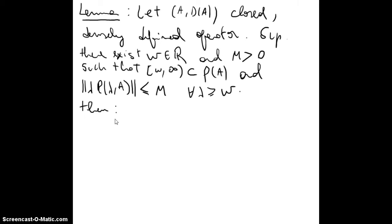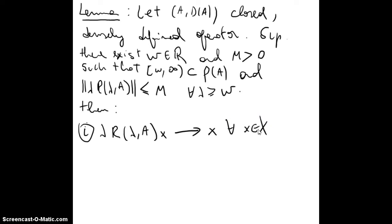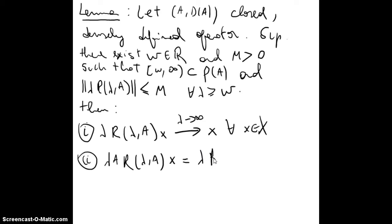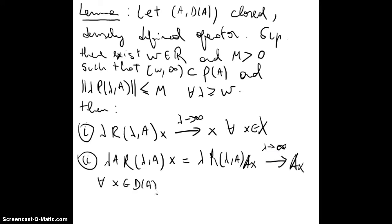Then we have the following. First, lambda R(lambda, A) of x converges to x for all x in X as lambda goes to infinity. And second, R(lambda, A) A of x equals A R(lambda, A) x, and this converges to Ax as lambda goes to infinity. This is for all x in the domain of A.